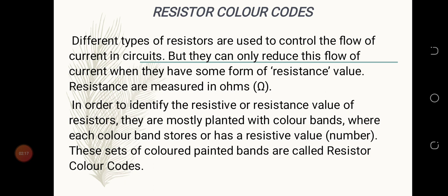Resistor color codes. Different types of resistors are used to control the flow of current in a circuit, but they can only reduce this flow of current when they have some form of resistance value. Resistances are measured in ohms. The sign you see in the bracket is ohms. In order to identify the resistance value of resistors, they are mostly painted with color bands, where each color band stores or has a resistive value or number. This set of colored painted bands are called resistor color codes.